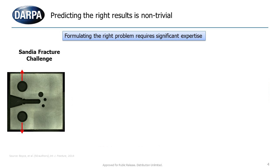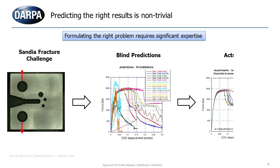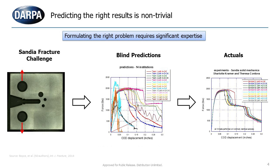As an example, if you look at the Sandia fracture challenge where they asked people to make blind predictions about a complex metal specimen to see when it would fracture when loaded, you will see in the middle chart that the predictions are all over the place. While if you look at the chart on the right, these are the actual results of when it would fracture. So whenever you look at the middle graph, how do you know which one is the right one? This is a major challenge and difficulty with all the analysis codes.